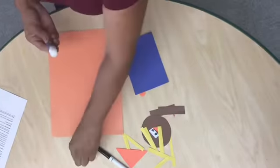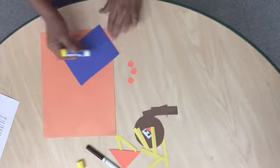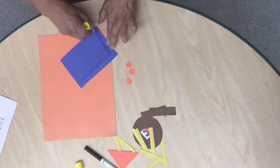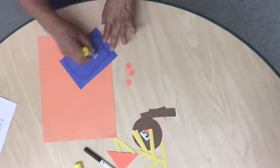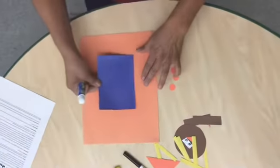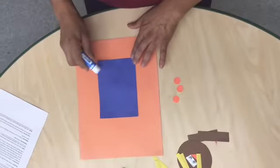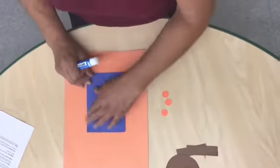Okay, so I'm gonna get my glue stick and get my big blue rectangle shape that's gonna be for my scarecrow, for the scarecrow body.